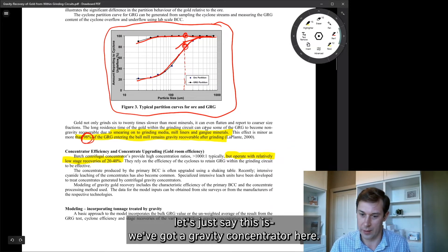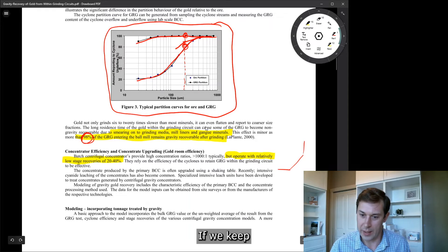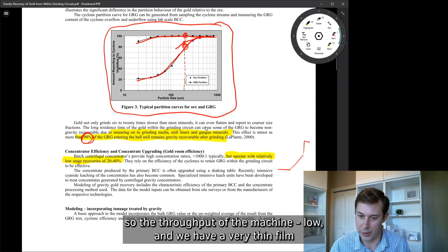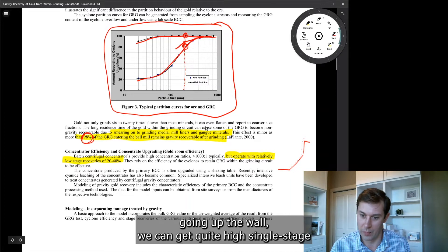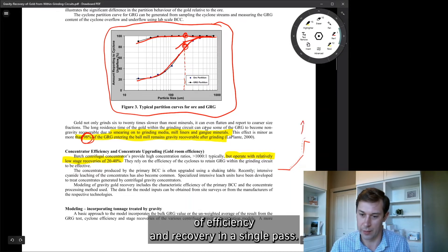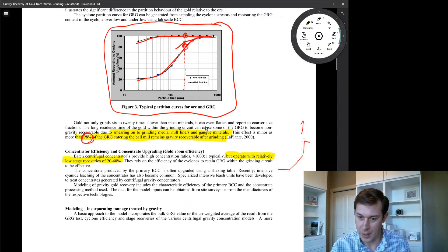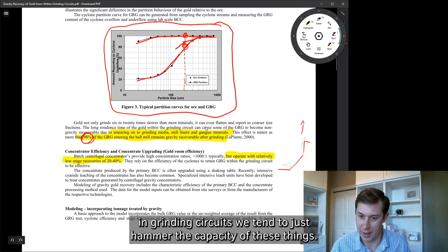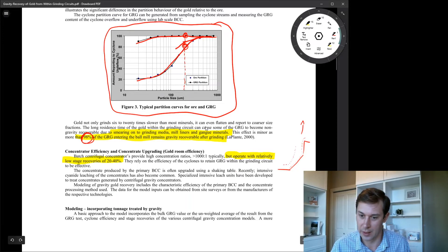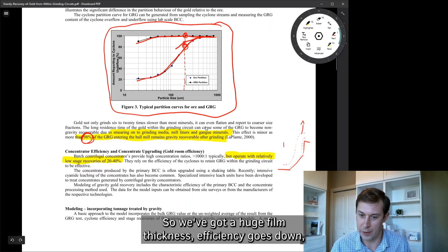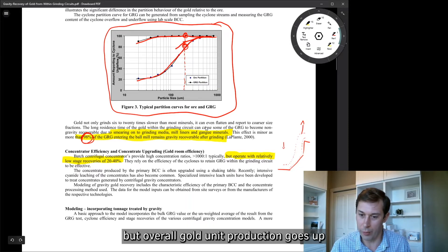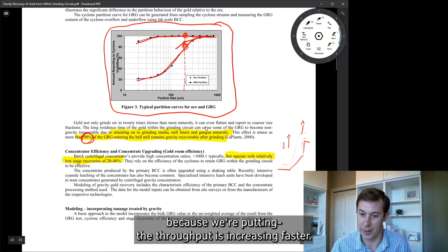So we can make a gravity concentrator very efficient by, let's just say this is a, let's say we've got a gravity concentrator here. If we keep the loading, so the throughput of the machine low, and we have a very thin film going up the wall, we can get quite high single stage efficiency and recovery in a single pass.